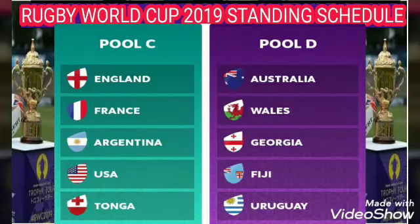In Pool D: Australia, Wales, Georgia, Fiji, and Uruguay — five teams in each pool.